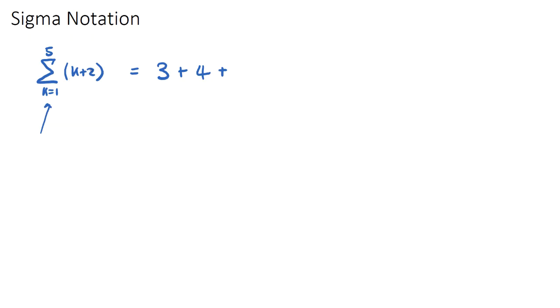And then we need to sum again. k equals 3. 3 plus 2 is 5. Then we need to sum again. k equals 4. 4 plus 2 is 6. Now when do we stop? Well, we stop when k reaches this top number, which in this case is 5. So this will be the last one. If k has now reached the top number 5, 5 plus 2 is 7.